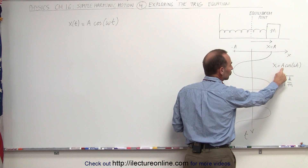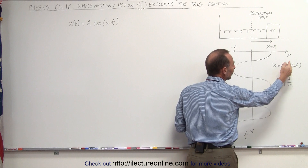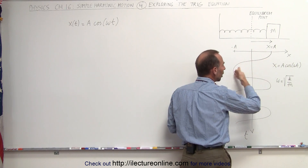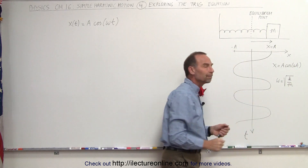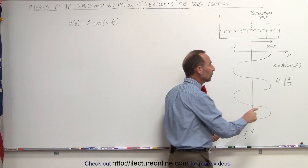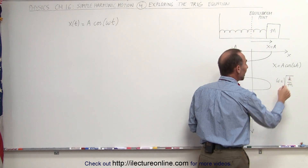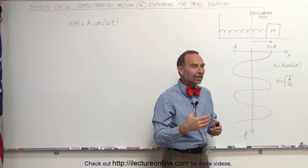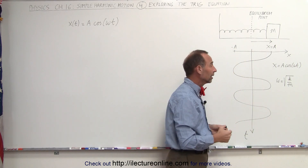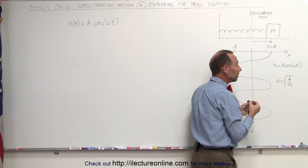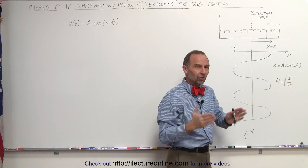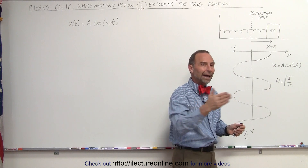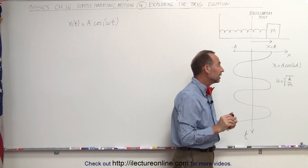Here, a represents the amplitude of the oscillation, and the cosine function defines where you will find the block as a function of time. Omega is the square root of k over m — what we call the angular frequency, in radians per second. k is the spring constant: the bigger the spring constant, the stronger the spring, and the faster the object will be pulled back to the equilibrium point.